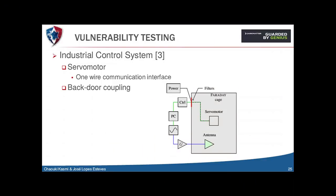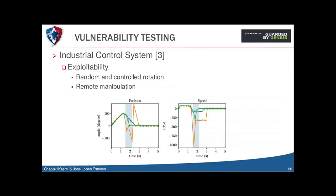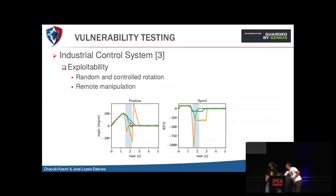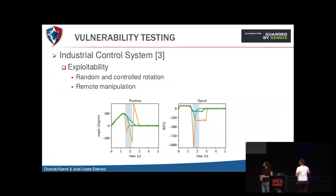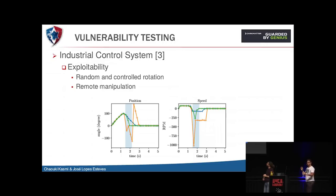We then wanted to test some SCADA systems, like industrial control systems. We put a servo motor in a Faraday cage and tested its behavior while running a specific path. The normal behavior of the device is shown in blue. When we sent our pulses — shown in green and orange — we were able to modify the position of the servo motor as well as its speed. So we were able to randomly manipulate the servo motor using our RF pulses.